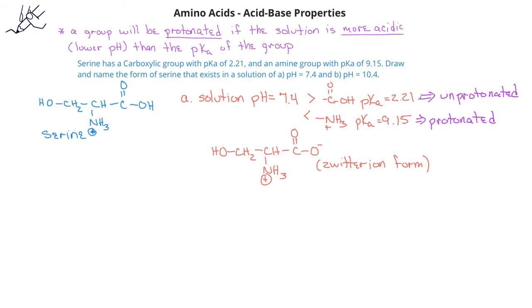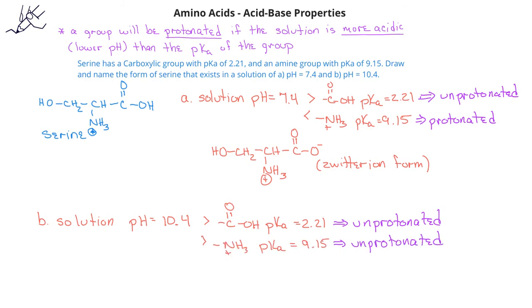Once you have an answer, you can restart the video and see if you got the correct form. Since a solution has a pH of 10.4, this is a higher pH value or more basic than the pKa for both groups, the amine group and the carboxylate group.